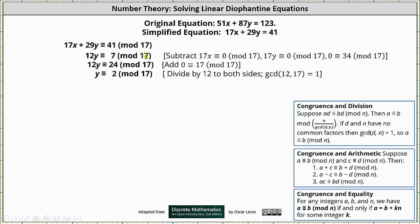To solve for y, we would like to divide both sides by 12, but notice right now 7 is not a multiple of 12. So now we need to add multiples of 17 to 7 until we get a multiple of 12.